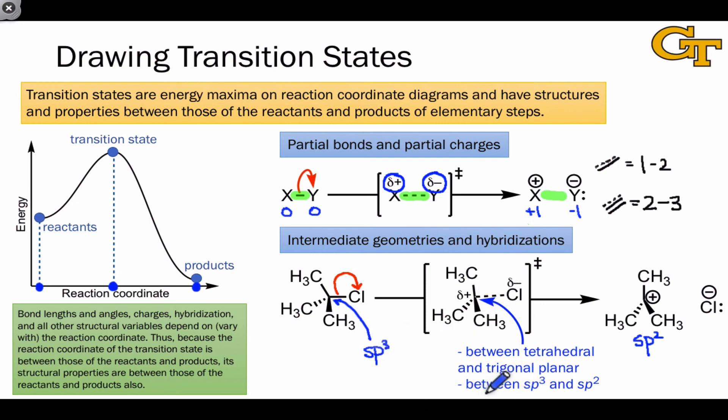This means that in the transition state, the hybridization of that carbon must be between sp3 and sp2, and the geometry must be somewhere between trigonal planar, as it is in the products, and tetrahedral, as it is in the reactants.